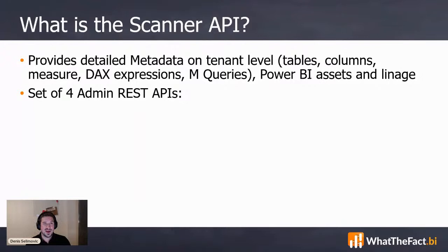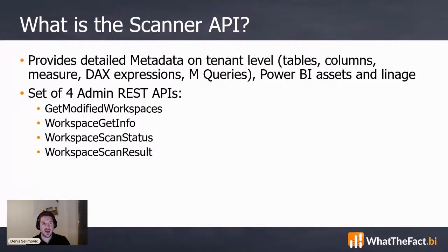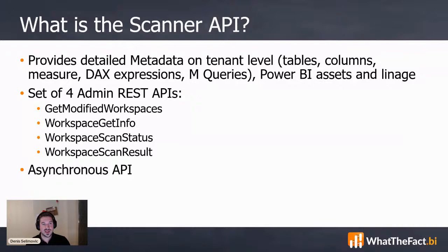The Scanner API is not one API like we know from the REST API. It is a set of four APIs: get modified workspaces, workspace get info, scan status, and scan result. Another speciality about the Scanner API is that it's an asynchronous API. Most other APIs are synchronous, and the Scanner API is asynchronous. That's the main reason why we need four API calls and not just one.